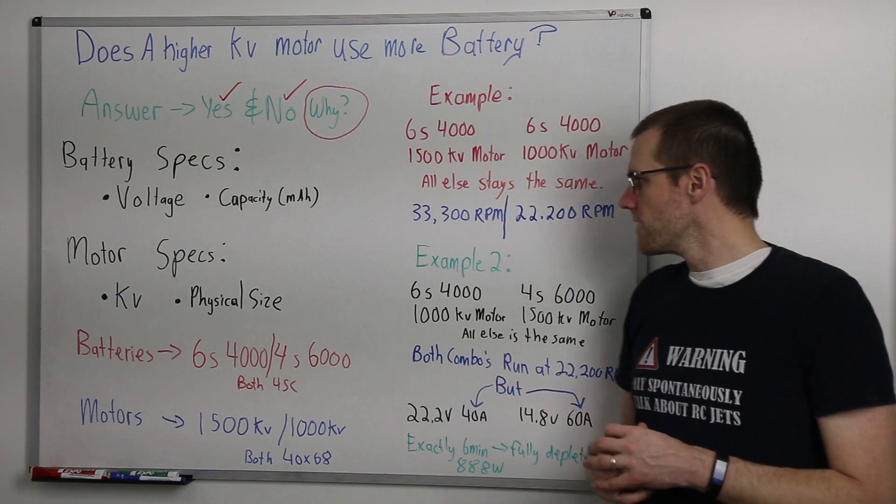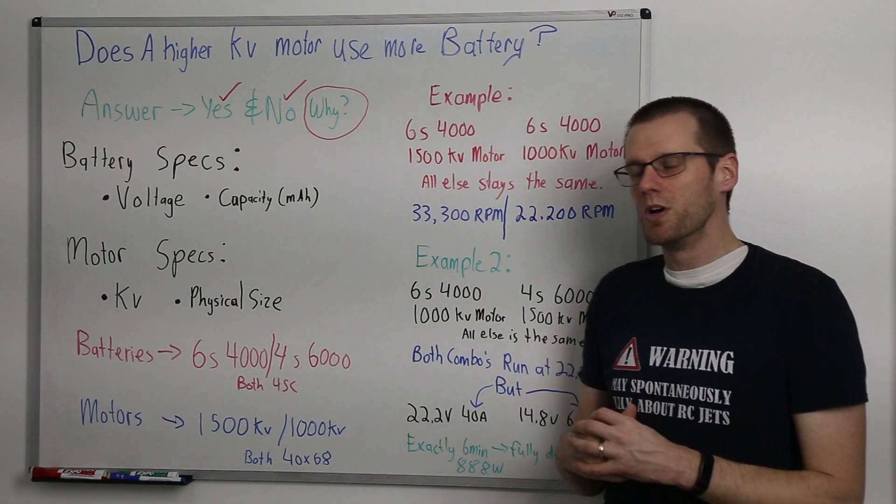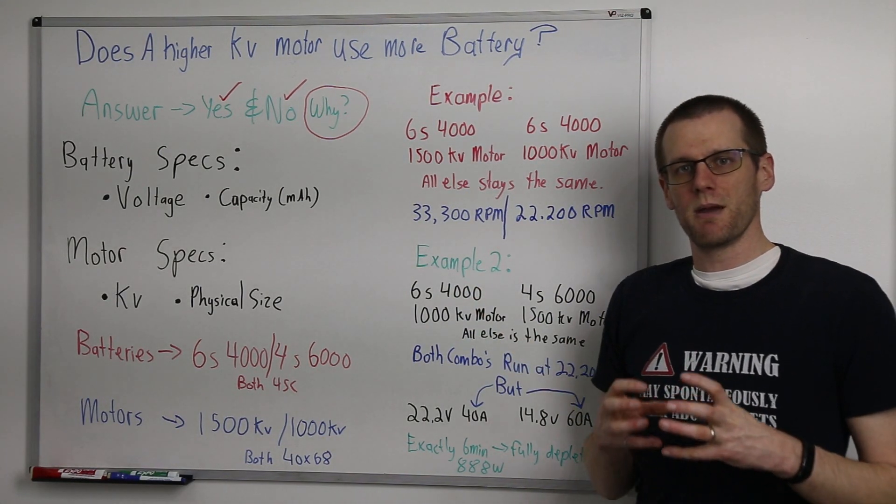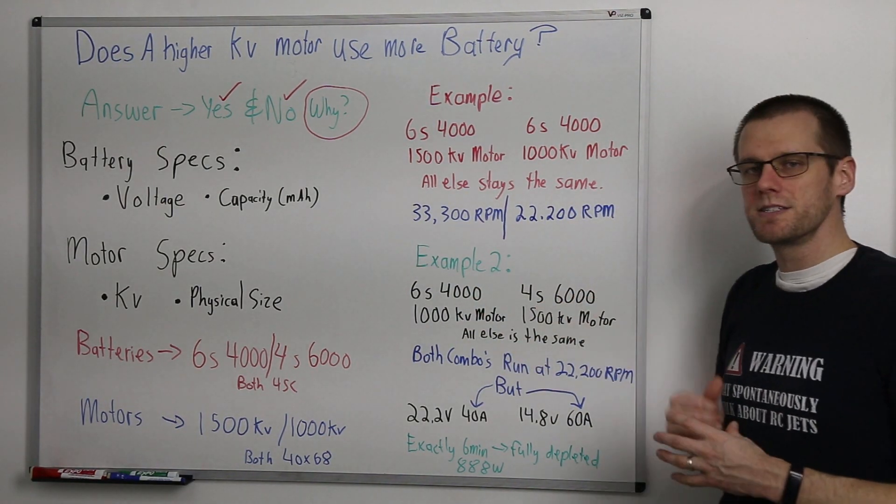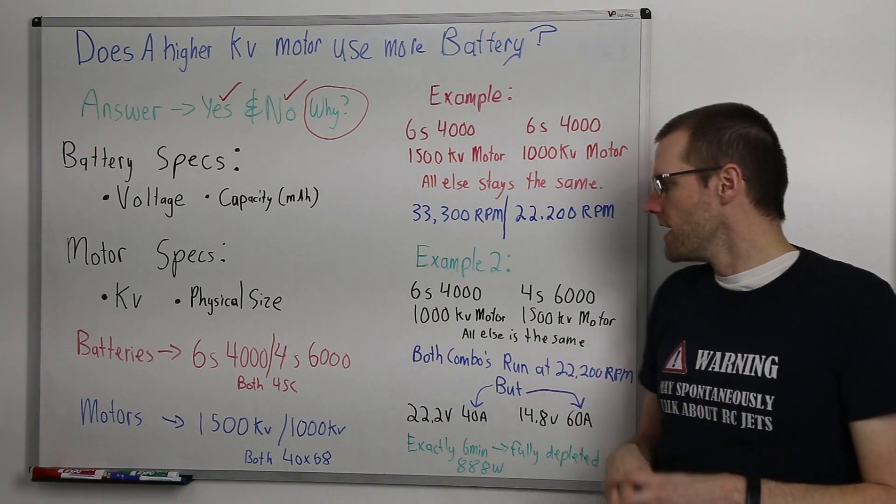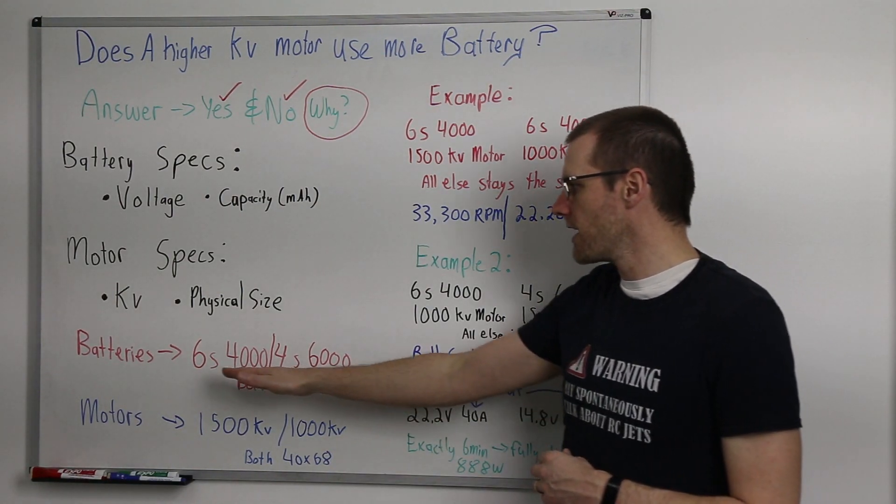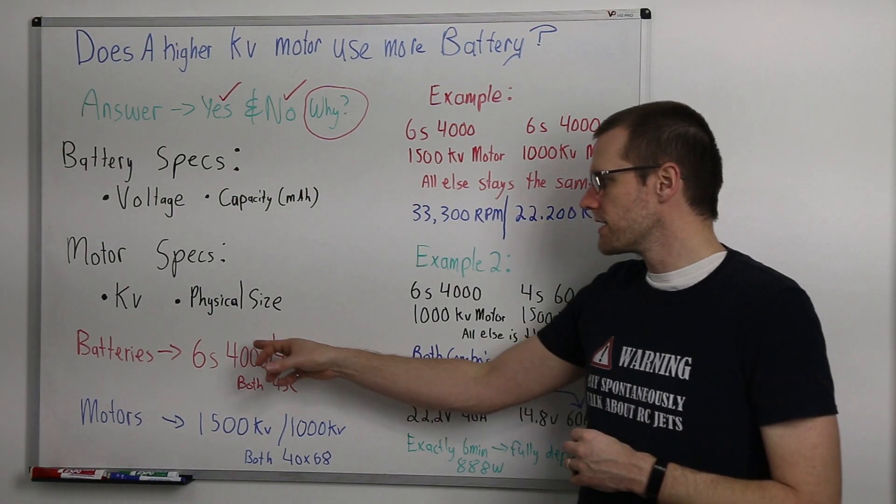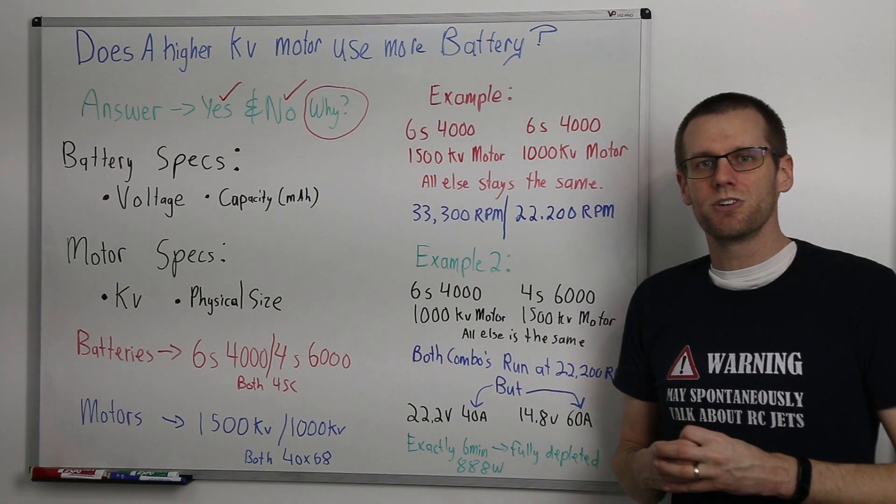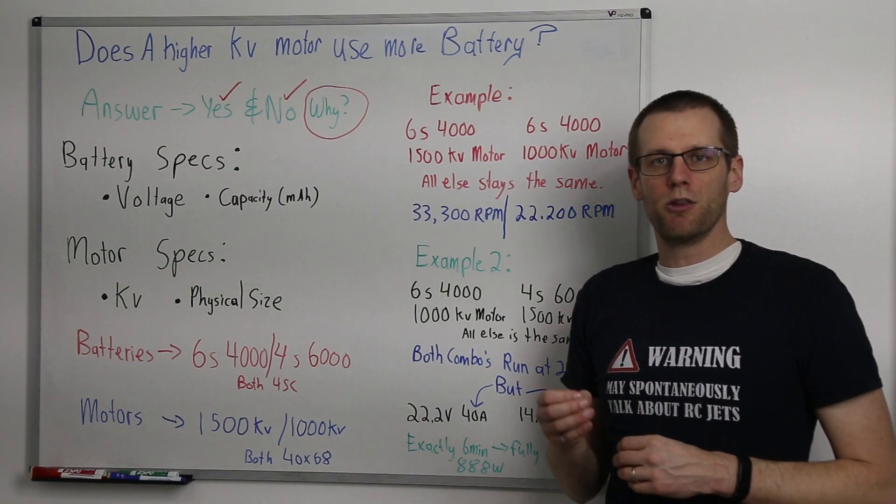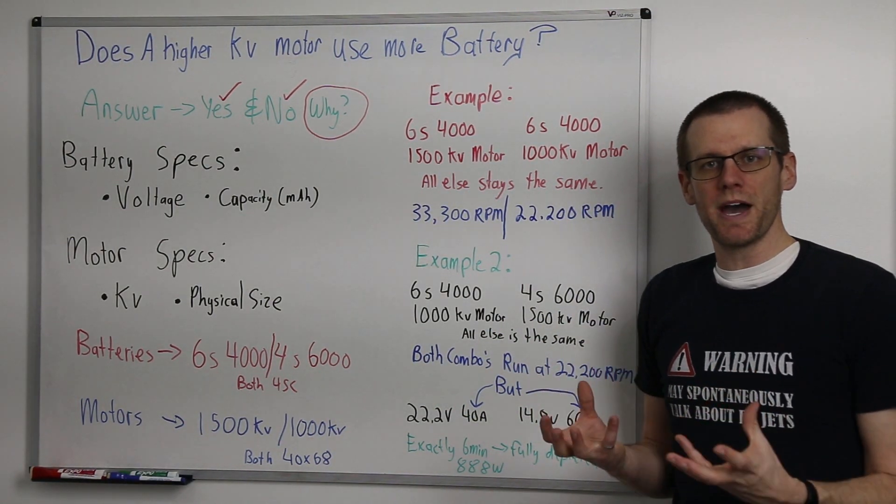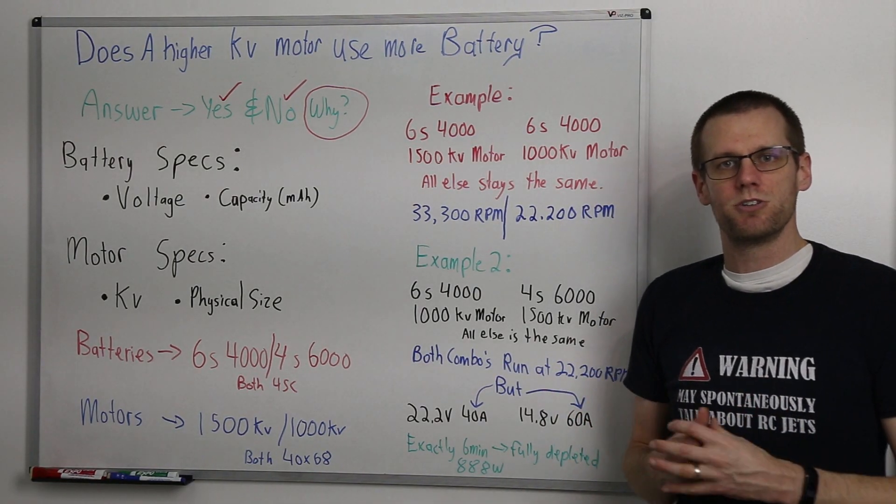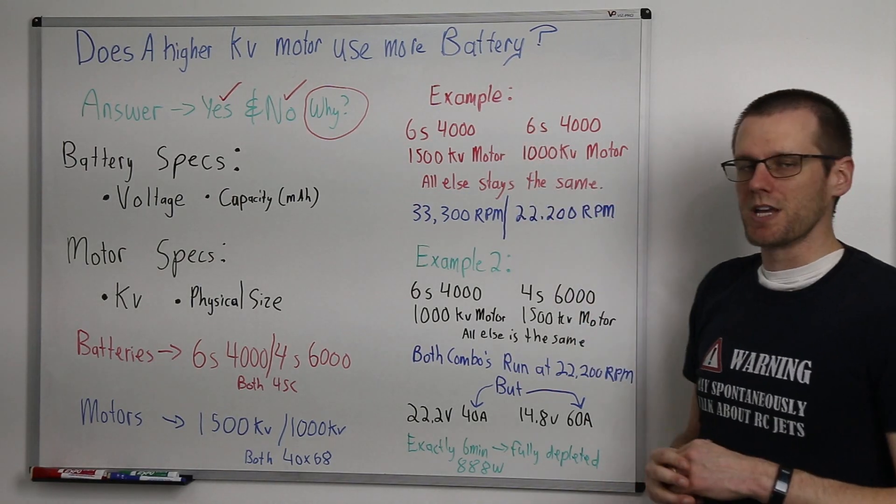So now let's move on and talk about example two. So in example two we have a 6s 4000 mAh battery pack and a 4s 6000 mAh battery pack. Now I didn't talk about this when we actually identified the specifications however a 6000 4s and a 6s 4000 are actually going to weigh in theory the exact same. So we're comparing battery packs that essentially have the same amount of overall energy inside of them.